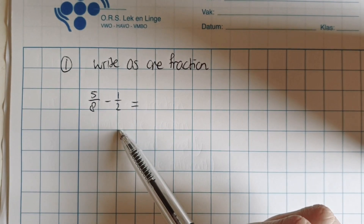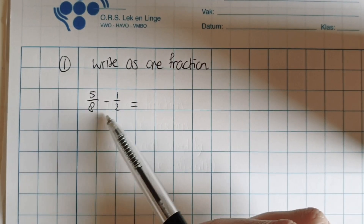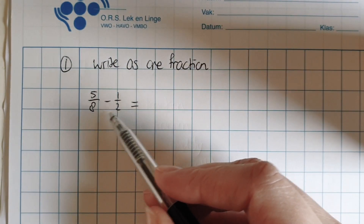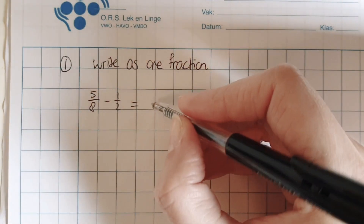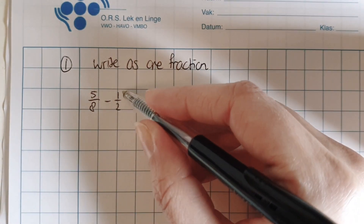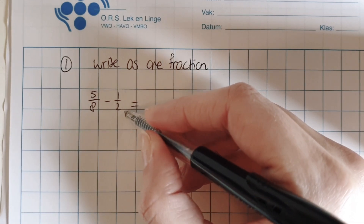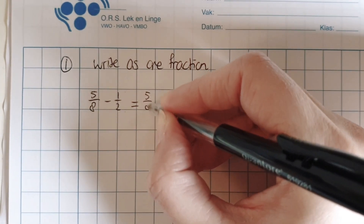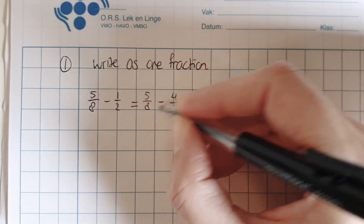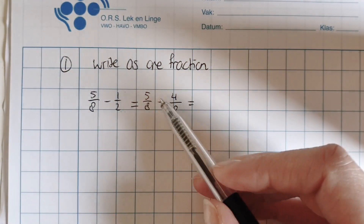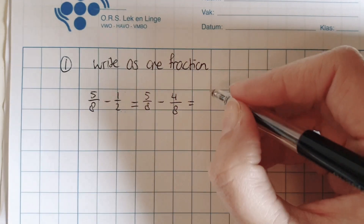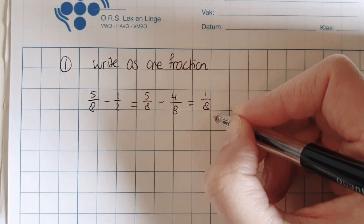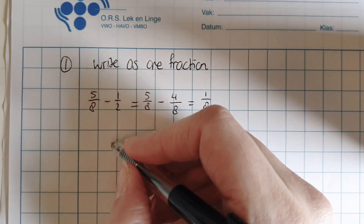Let's start a little bit simple here. So 5 over 8 minus 1 over 2. The denominators — the bottom ones — 8 and 2 are not the same, so I'm going to make them equal. I can see that immediately: numerator and denominator both times 4, and then the denominators are the same. Times 4 becomes 4, this one times 4 becomes 8. Then the numerators minus each other, the denominator stays the same, so it's 1 over 8.